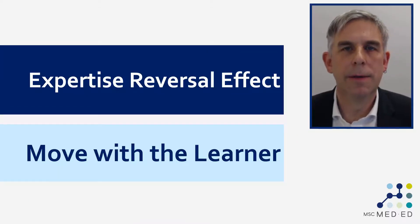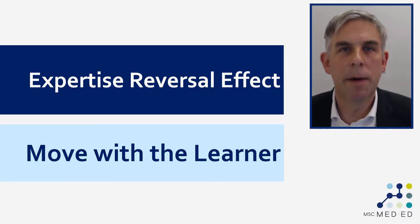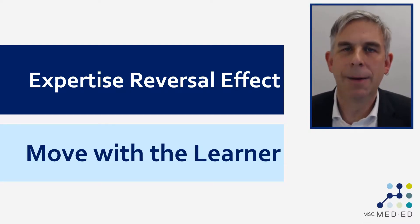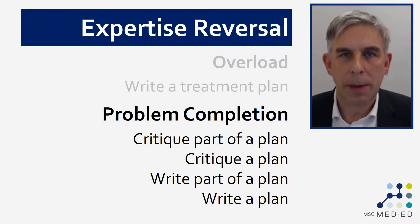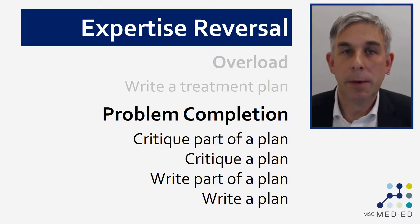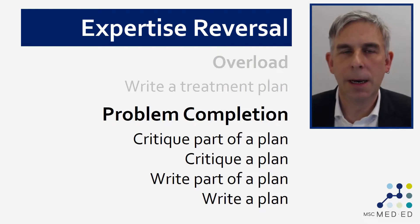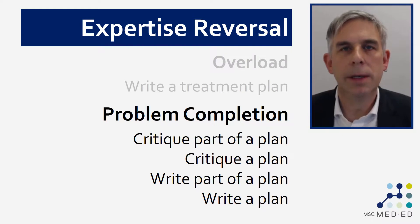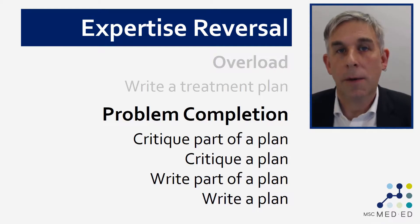The final effect I want to talk about from cognitive load theory is what we call the expertise reversal effect. If we stick with our analogy of scaffolding, as a building nears completion we need to start taking the scaffolding down, otherwise it's going to get in the way. The same is true of learning. Using problem completion as an example, as our learners move from novice to expert and start being able to write their own treatment plans, if we keep asking them to critique part of a plan as we did at the beginning, that's going to get in the way and might actually impair learning. There's also some evidence that experts do less well on some of these early-stage tasks than novices.